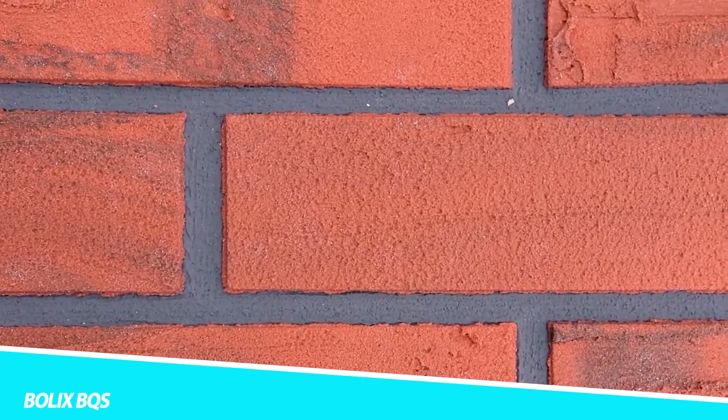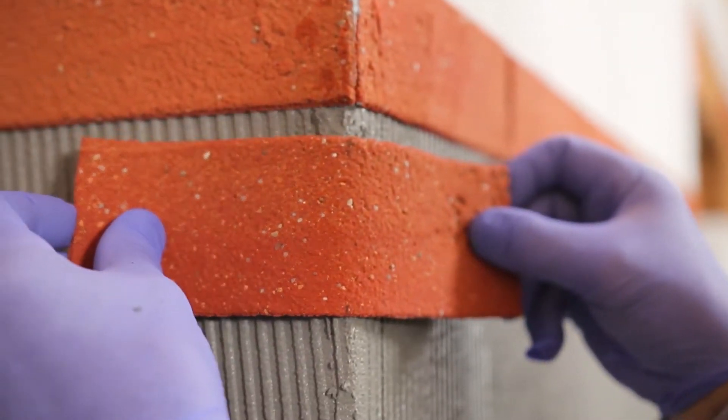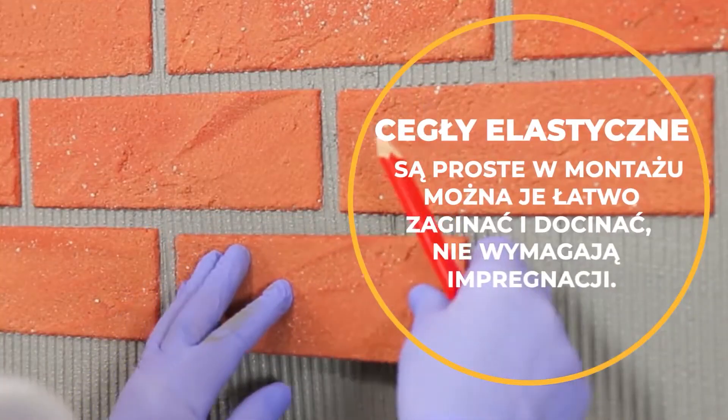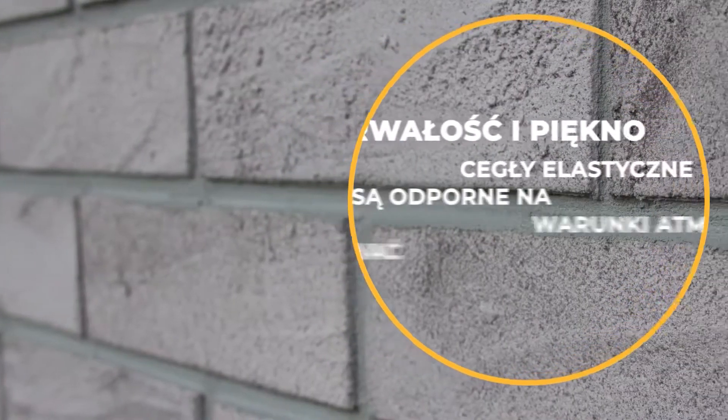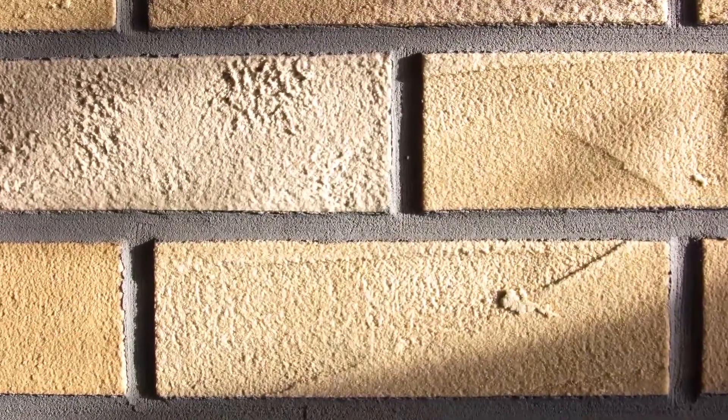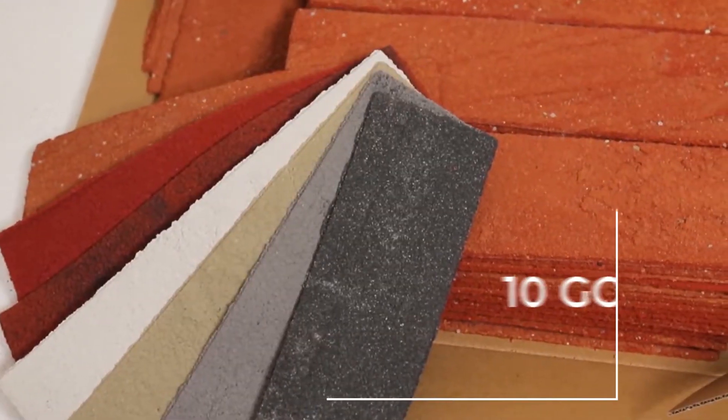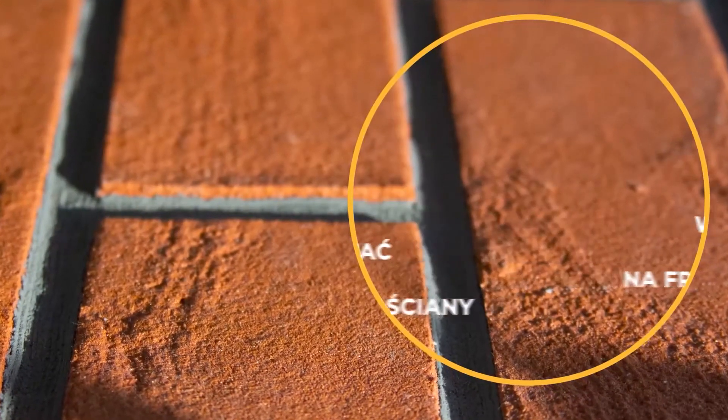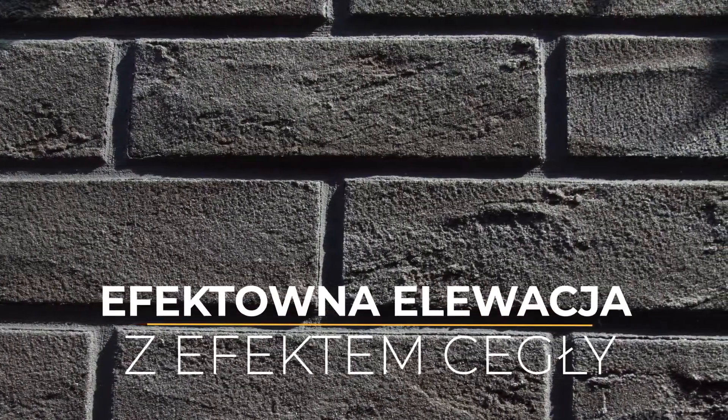BOLIX BQS is a type of construction technique used in the building industry for external wall insulation systems. It is a high-quality, energy efficient, and cost-effective system that provides thermal insulation and weather protection for buildings. The BOLIX BQS system consists of a number of components, including an insulating material made of expanded polystyrene or mineral wool, a mesh reinforcement layer, and a topcoat layer. These components are applied to the exterior of a building to create a seamless and protective barrier against heat loss, water damage, and weathering. One of the key benefits of the BOLIX BQS system is its high energy efficiency.